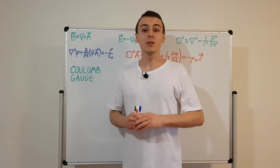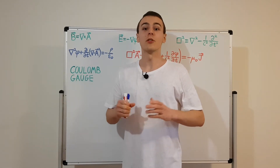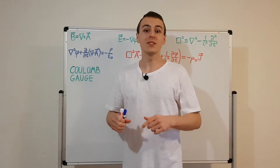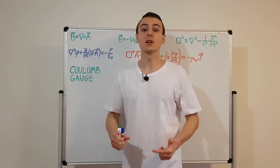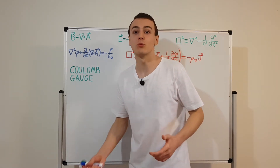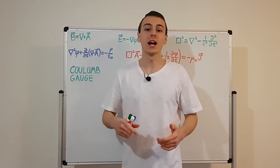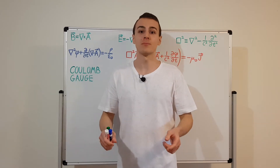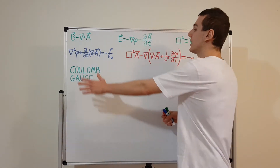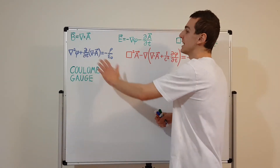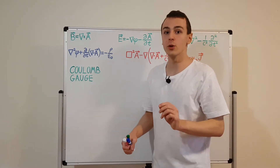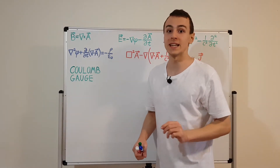In this video, I'm going to introduce the Coulomb gauge. This video is part of a playlist on electromagnetism. In the previous video, I introduced the Lorentz gauge, and I actually covered a lot of these equations there. But I'm going to give a quick overview if you haven't seen that video.